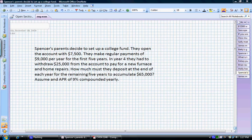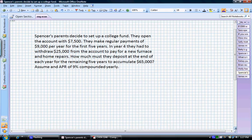In year four, this is the trick here, they have to withdraw $2,500 from the account to pay for a new furnace and home repairs. The question is, how much must they deposit at the end of each year for the remaining five years to accumulate the $65,000 they need for Spencer's education? And again, we have an APR of 9% compounded yearly.